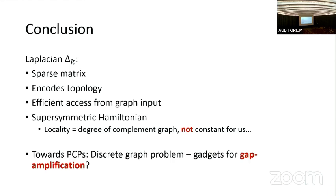A last point, inspired by my advisor Thomas Vidick who really likes the quantum PCP conjecture: it's interesting that there's this discrete graph problem that is QMA-hard, because how did we prove the classical PCP? We had gadgets which amplified the gap of NP-hard graphs. So, very tentatively, a future direction is: can we do gap amplification on these sorts of problems? Thanks very much.